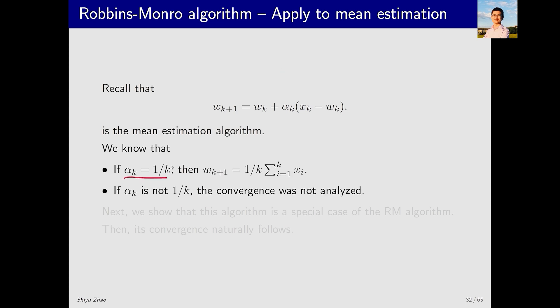If a_k equals one over k, we can explicitly write out that w_{k+1} is indeed the average of k x_i values. If a_k is not one over k, we cannot write out such an explicit value. However, can we still prove that w_{k+1} will converge to E[x]?